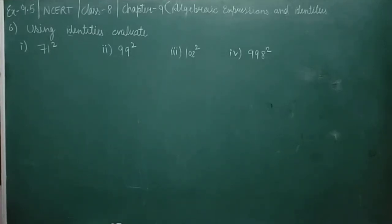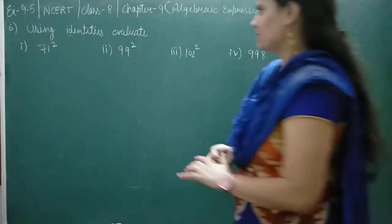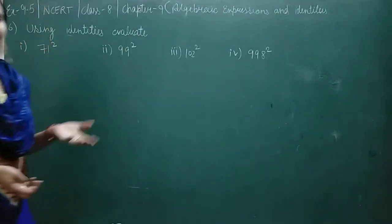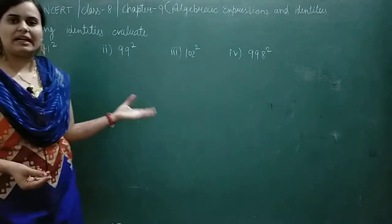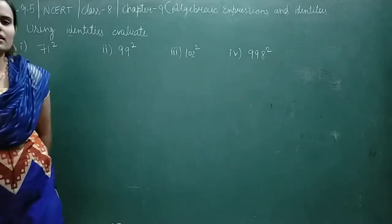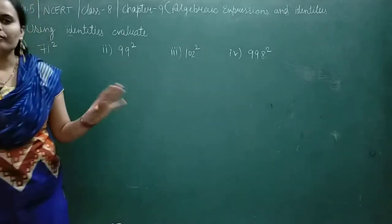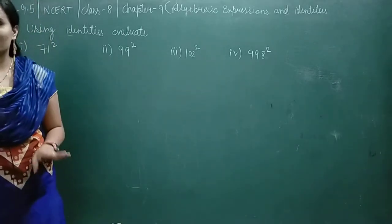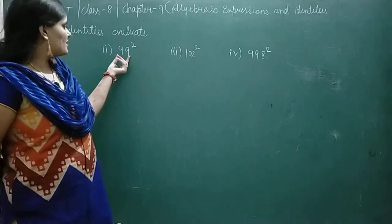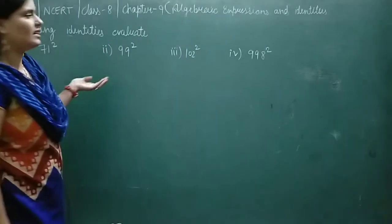Welcome back students. Today let's start the questions. This is the very easiest question of this exercise — it is the application of the identities we have studied. We had algebraic expressions and we need to use simple algebra: multiplication, square, or division. You have to use your identity.